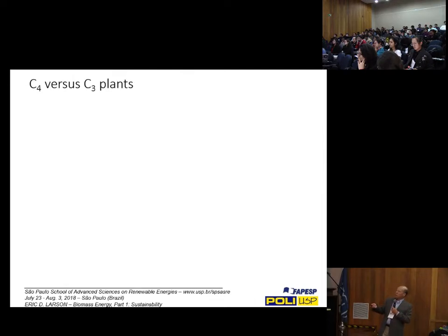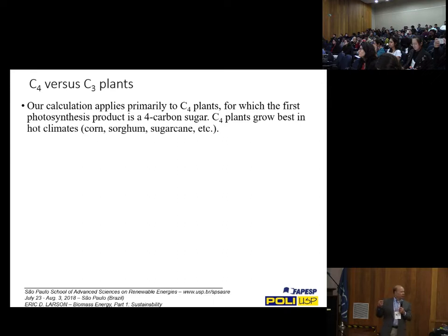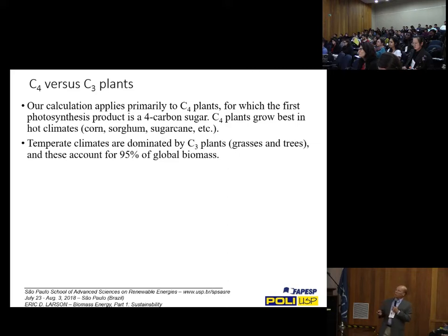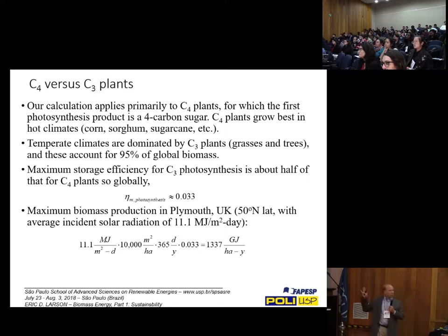This 6–7% efficiency figure relates primarily to C4 plants — those where the first photosynthetic product is a 4-carbon sugar instead of a 3-carbon sugar. C4 plants include sugarcane, corn, and sorghum, which grow best in hot climates. C3 plants — grasses and trees — make up about 95% of the world's biomass, and their maximum storage efficiency is about half of that for C4 plants.